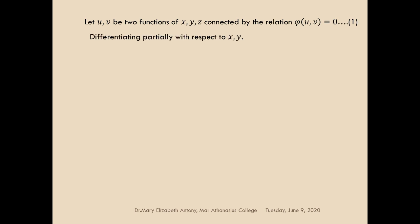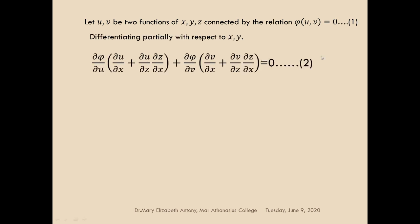We differentiate equation 1 with respect to x and y. When we differentiate with respect to x, what we get is dou phi by dou u — and since u involves x, y, and z, we apply the chain rule — dou u by dou x plus dou u by dou z into dou z by dou x. Remember that z is the dependent variable. Plus dou phi by dou v into dou v by dou x plus dou v by dou z into dou z by dou x, equal to 0.